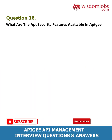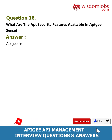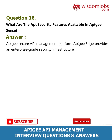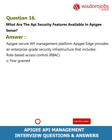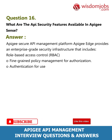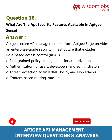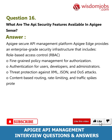Question 16: What are the API security features available in Apigee? Answer: Apigee's secure API management platform, Apigee Edge, provides an enterprise-grade security infrastructure that includes role-based access control (RBAC), fine-grained policy management for authorization, authentication for users, developers and administrators, threat protection against XML, JSON, and DoS attacks, content-based routing, rate limiting, and traffic spike protection.